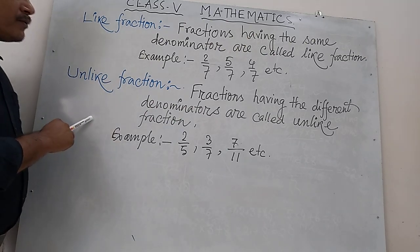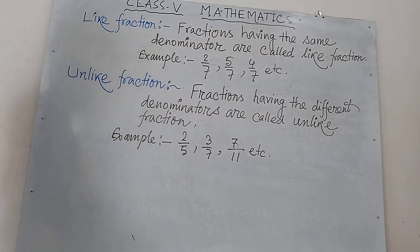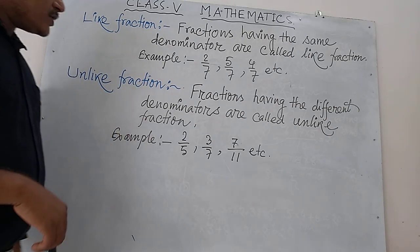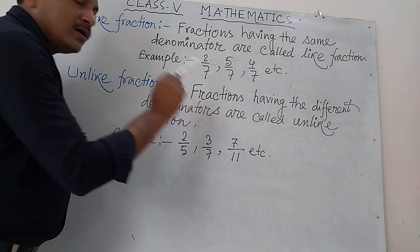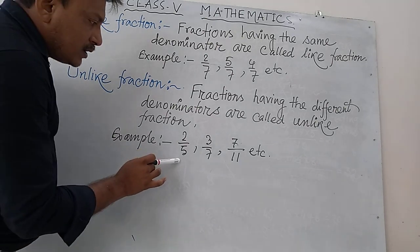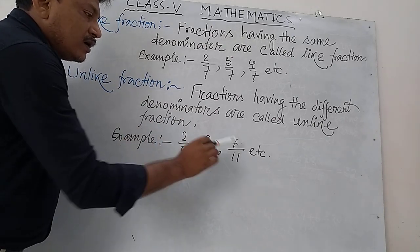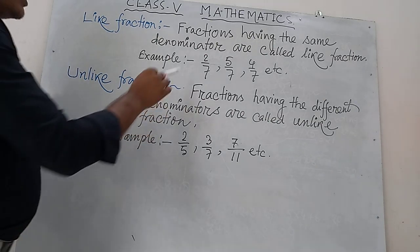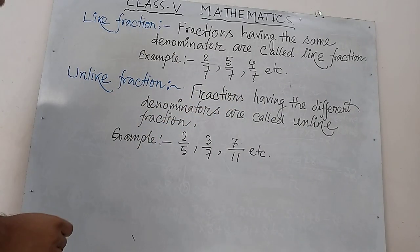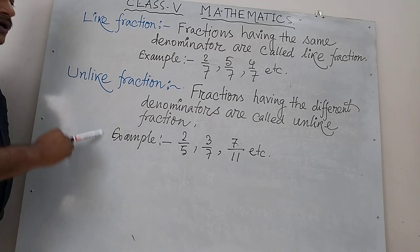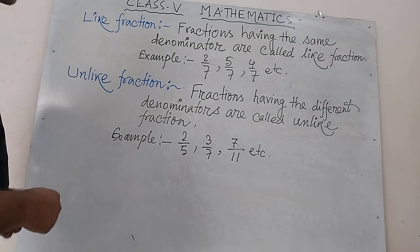And what is an unlike fraction? Fractions having different denominators are called unlike fractions. For example, 2 by 5, 3 by 7, 7 by 11, and so on. Here the different denominators are 5, 7, and 11. So in like fractions all the denominators are the same, and in unlike fractions all the denominators are different.